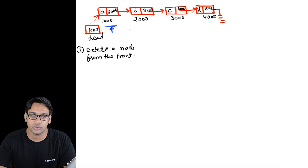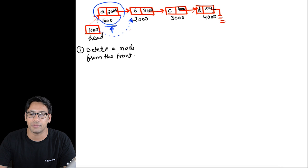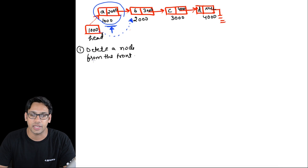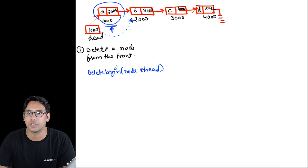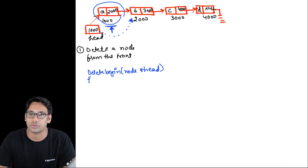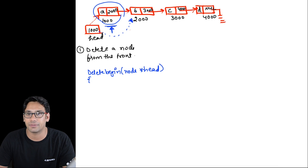To delete the front node, we have to make head point to the next memory location and then free that memory. We will write a function called delete_begin which takes the address of the head node. Inside the function, we make head point to the next node and then use the free() function to release the front node's memory.